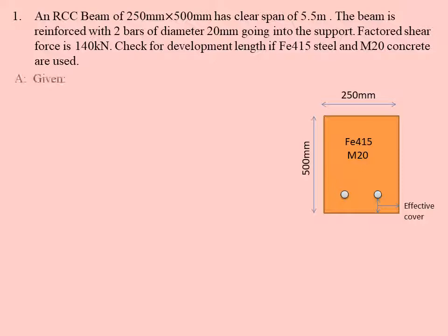Now let's write the given details. b = 250 mm, D = 500 mm, L that is the clear span is 5,500 mm. When you convert meter to mm, 1 meter equals 1000 millimeters. Number of bars is 2.